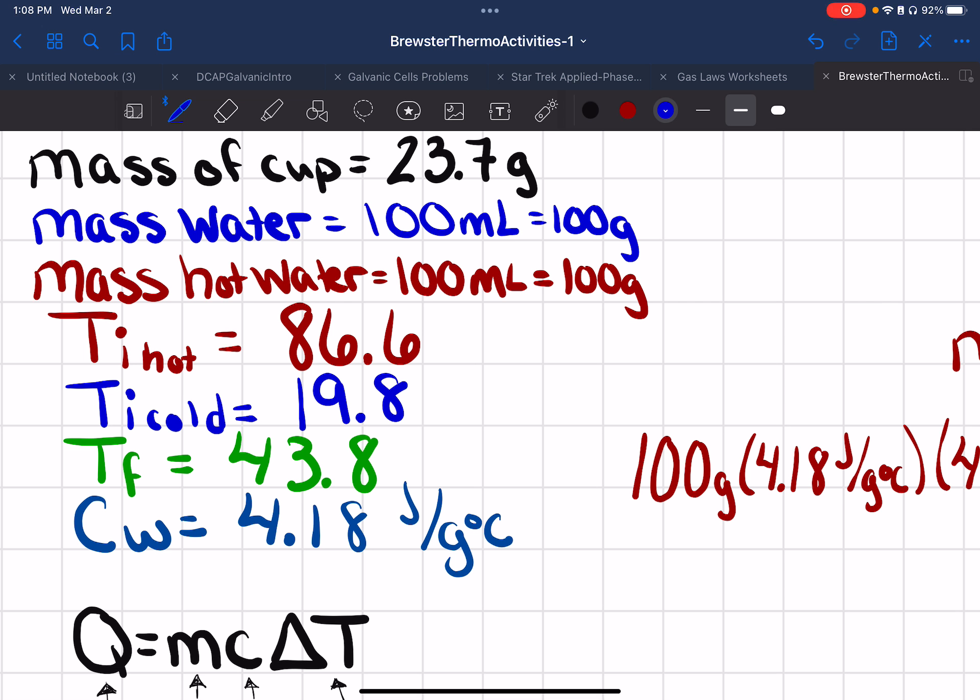The temperature initial for the hot is 86.6 for this data that I took. And you should all have something around that area. TI cold for this group's data I took was 19.8. And when we got through and it equilibrium off, I took the highest temperature, which is 43.8. The CW, the specific heat value for water is set to be 4.18 joules per gram degree Celsius.